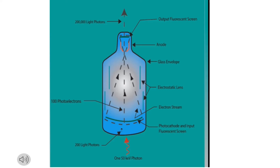Behind that you can see there's this photocathode which picks up the light and turns it into electrons, which are then accelerated towards the anode. It's similar to an x-ray tube, but instead of striking the anode, they strike the output phosphor.